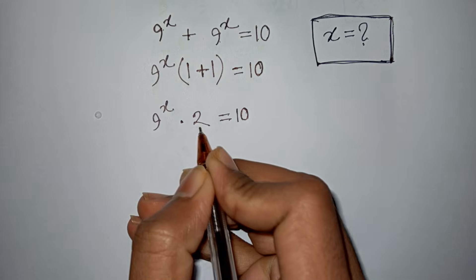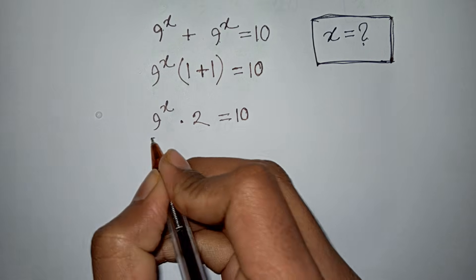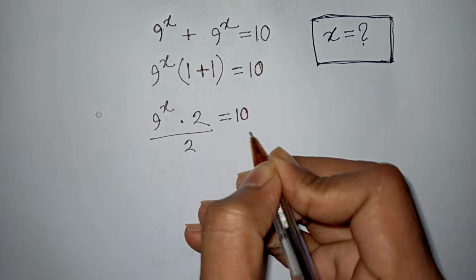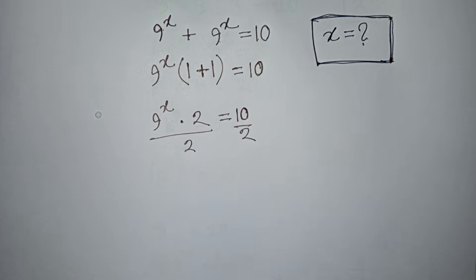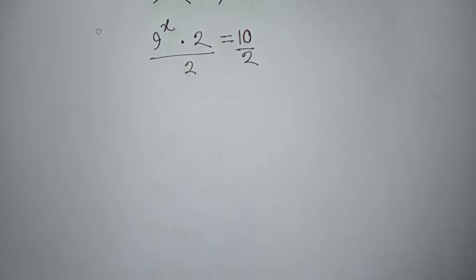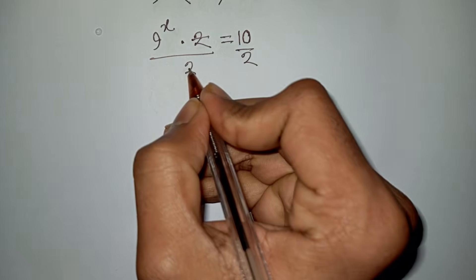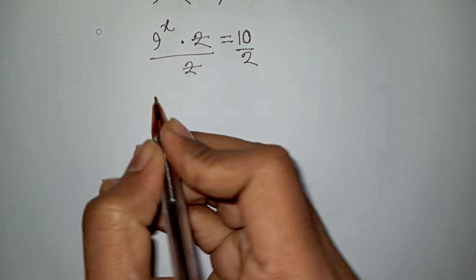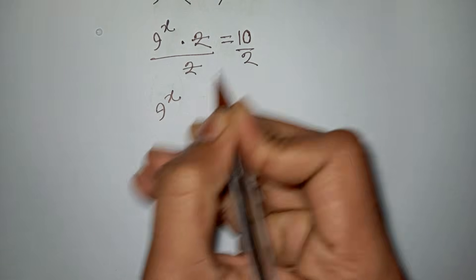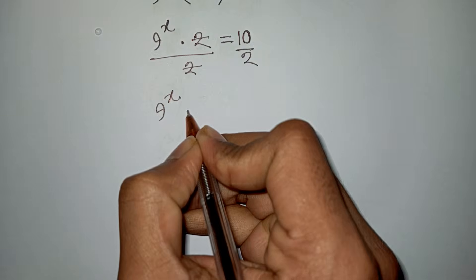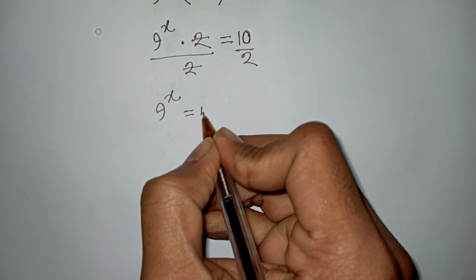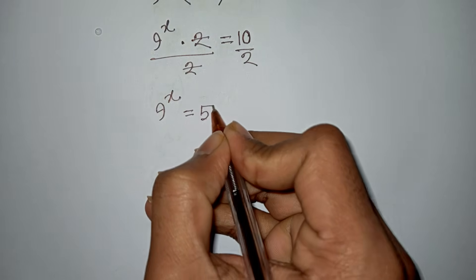Now we divide both sides by 2. The 2's cancel, so we have 9^x is equal to 10 divided by 2, which means 9^x equals 5.